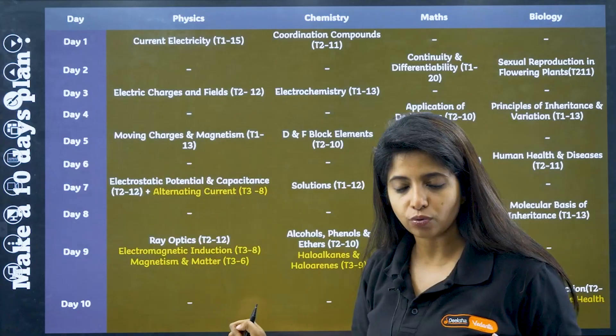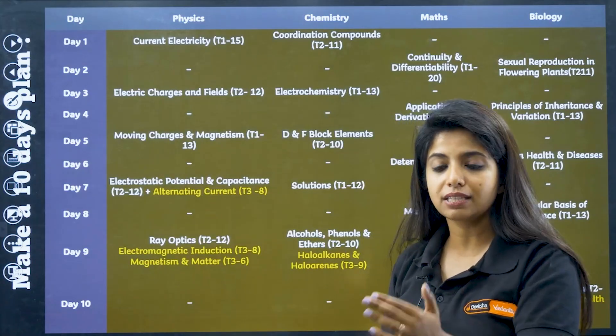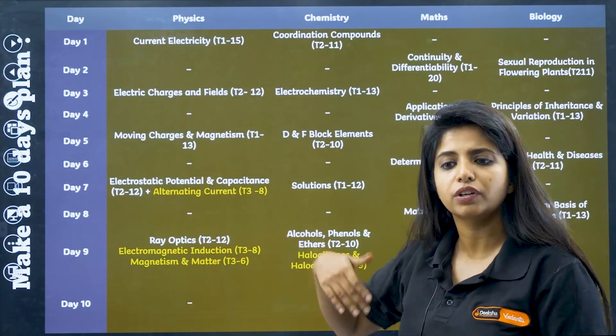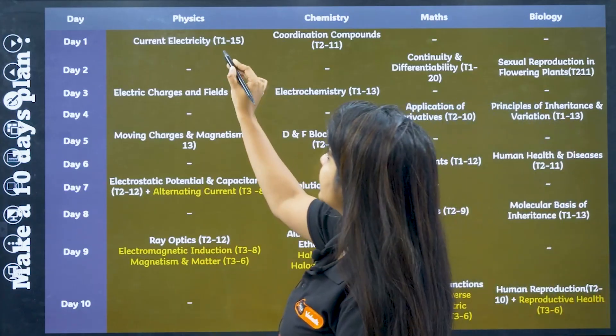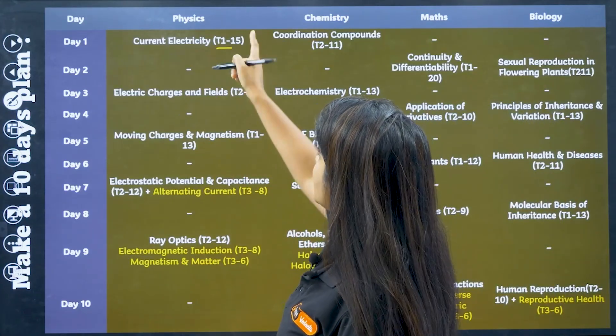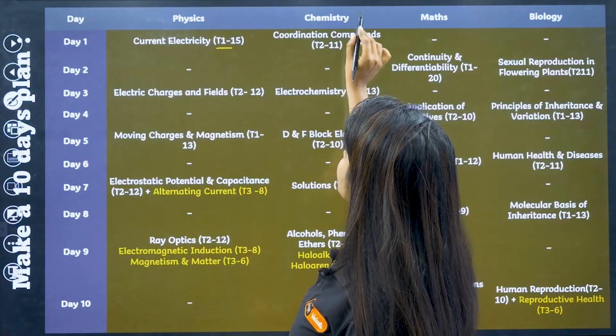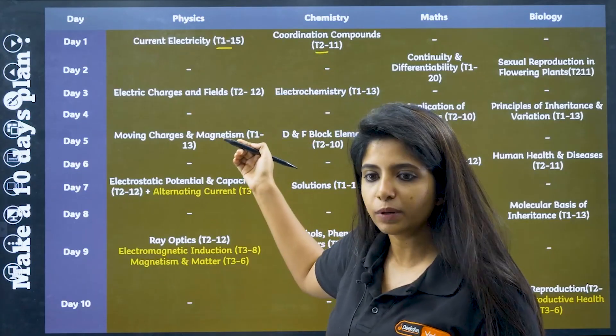But you can do it yourselves as well, depending on whatever you have covered already. You can rearrange the chapters. So what I have done, easy language, I will tell you. I have taken a Tier 1 chapter in physics, and on the same day I will be completing a chemistry chapter of Tier 2, that is medium priority.